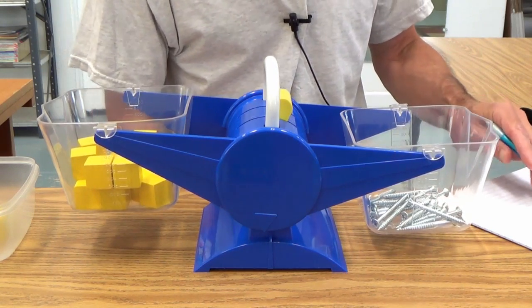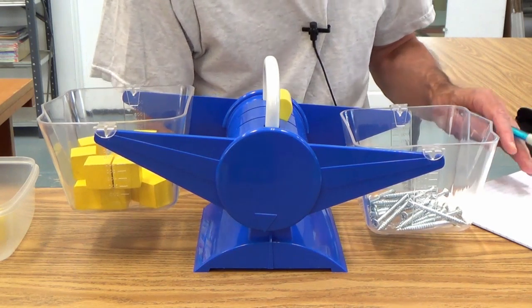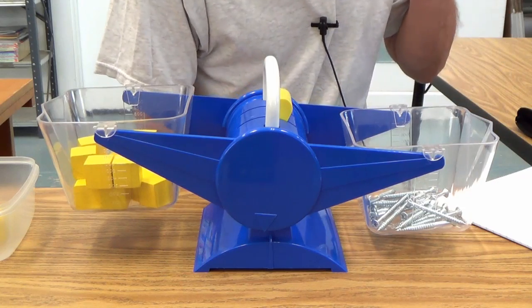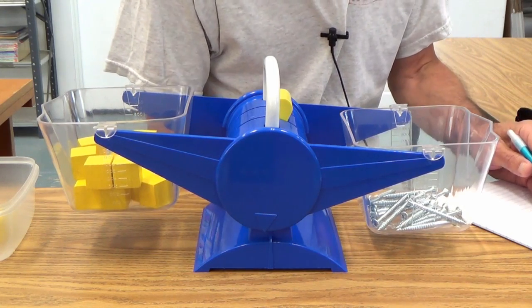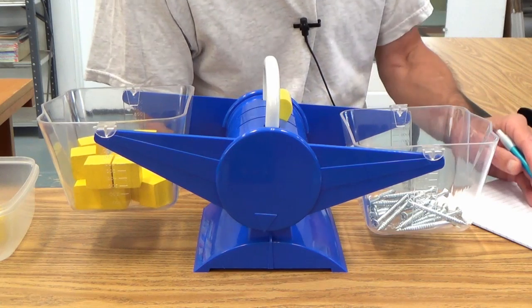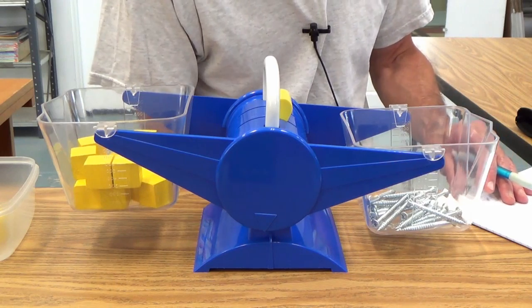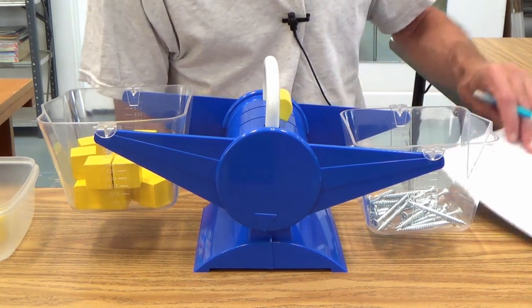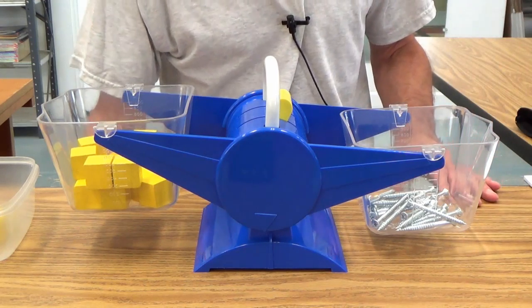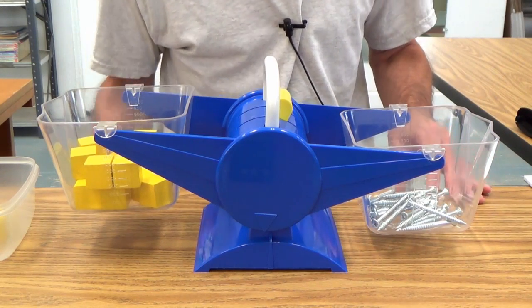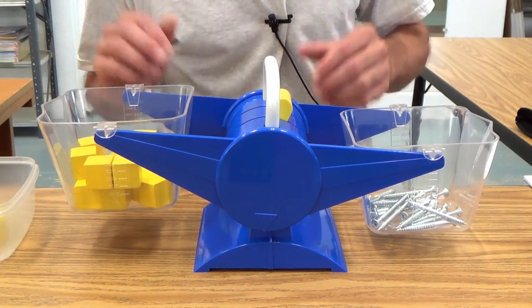So your child might want to make some inferences about that. She might look at those figures and realize, well, the wood screw must weigh slightly less than the cube. Or she might say the cube might weigh a little bit more than the wood screw by looking at those numbers. So once again, it's great to ask your child questions while you're doing this or allow him or her to make inferences as to the comparisons.